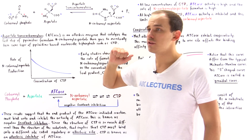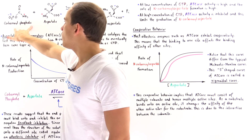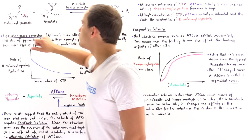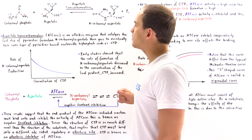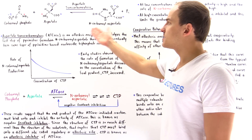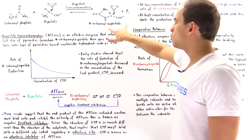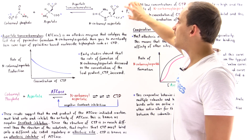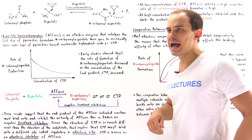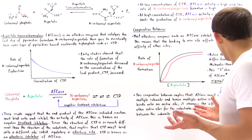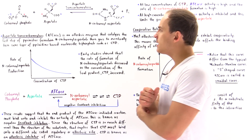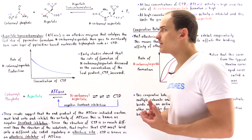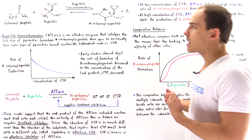The reaction is shown on the board. We have carbamoyl phosphate reacting with aspartate — these are the two substrate molecules for aspartate transcarbamoylase. This enzyme catalyzes the conversion of these molecules into two products: orthophosphate and N-carbamoyl aspartate. The first question you might be thinking is: what's the big deal with this reaction? What is the physiological significance of this reaction inside our body?